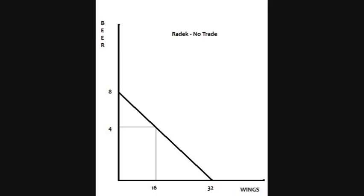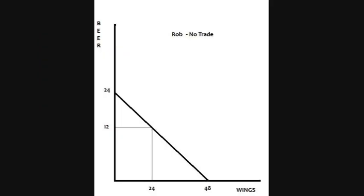Let's look at a couple of graphs. Say that I, Radek, am good at making wings, and Rob is really good at making beer. In my little country, I can either make 32 wings in a day or 8 bottles of beer in a day. When I sit down to watch the big game, I don't want just beer and I don't want just wings, so I need some combination. In my world, I can make a combination of 4 bottles of beer and 16 wings. In Rob's world, he also likes beer and wings while watching the big game, and he's better at making both — he can either make 24 bottles of beer in a day or 48 wings in a day.